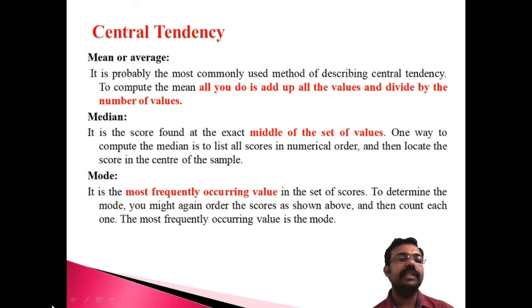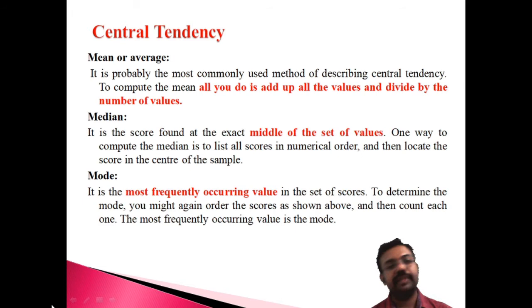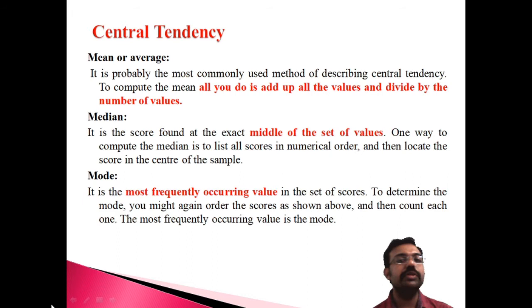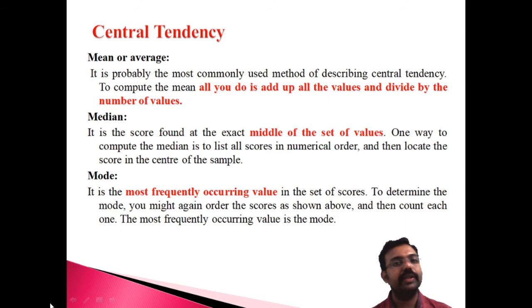The mean is also known as the average. This method for describing central tendency requires you to add up all the values and divide by the number of values. Just add all the numbers and divide by the corresponding count — that is known as the mean or average.